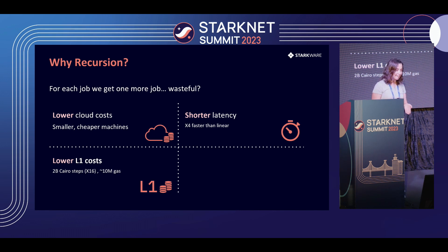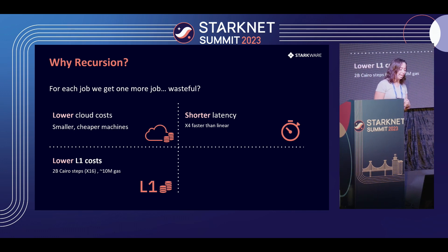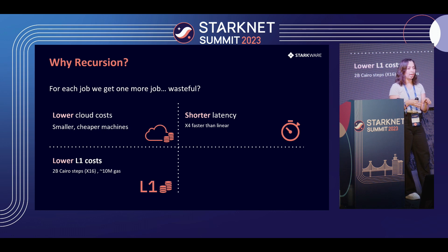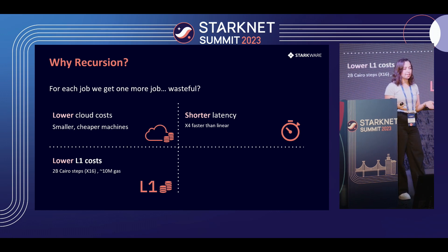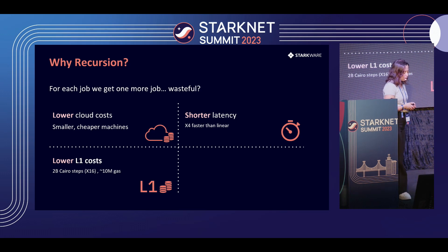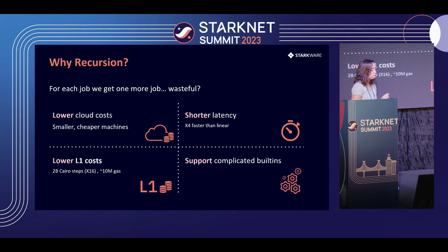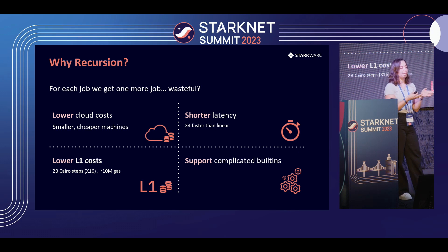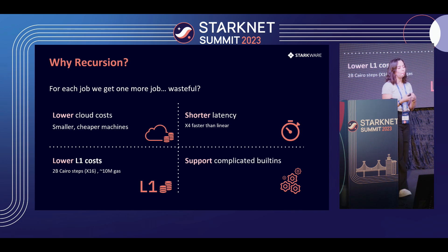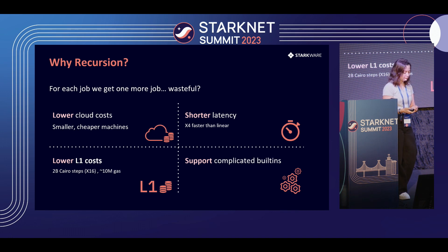We also have shorter latency, which is also very surprising — we gain lower cloud cost, lower L1 cost, and shorter latency. How can it be? Because now we don't need to wait for many jobs to arrive. The moment a job arrives, we just start proving it. We parallelize the work in a way that eventually makes it four times faster to go on-chain. And lastly, we can now support much more complicated built-ins more easily, because jobs are verified by the Cairo verifier, not the Solidity verifier. We can add complicated built-ins and verify them using the Cairo verifier without changing the Solidity verifier logic.